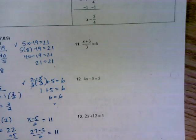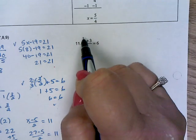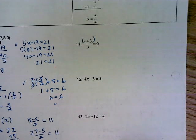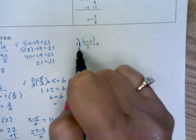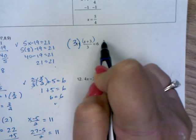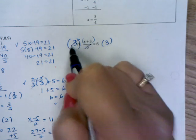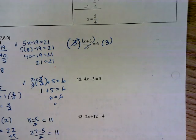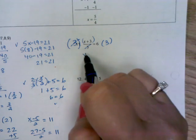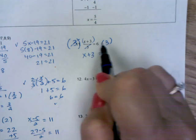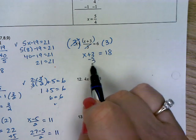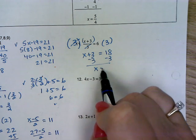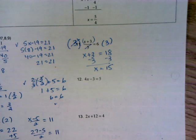Number 11 — again, imaginary parenthesis. I need to get rid of the 3 in the denominator, so I multiply both sides by 3. My numerator and denominator cancel out, and I'm left with x plus 3. 6 times 3 is 18. Now I have a one-step equation — done.